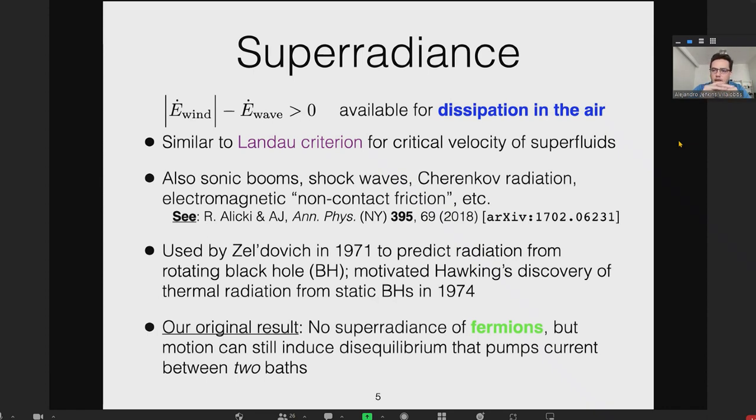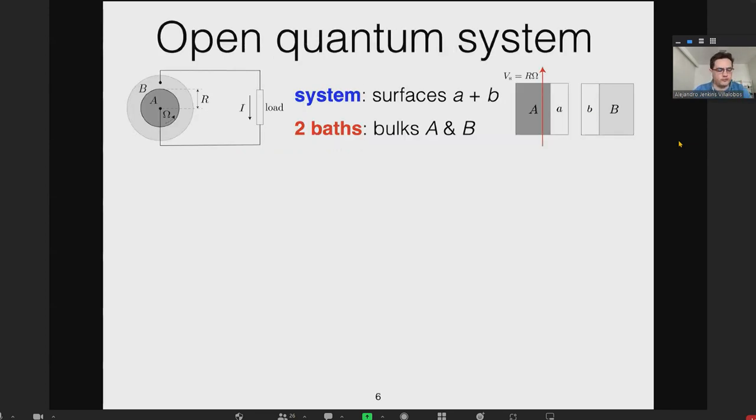Zel'dovich used this argument to predict that a rotating black hole should radiate—the first prediction that a black hole could radiate. This later motivated Hawking's work showing that a black hole has all the properties of a thermodynamic object. It's known you get super-radiance for bosons, but not for fermionic fields.